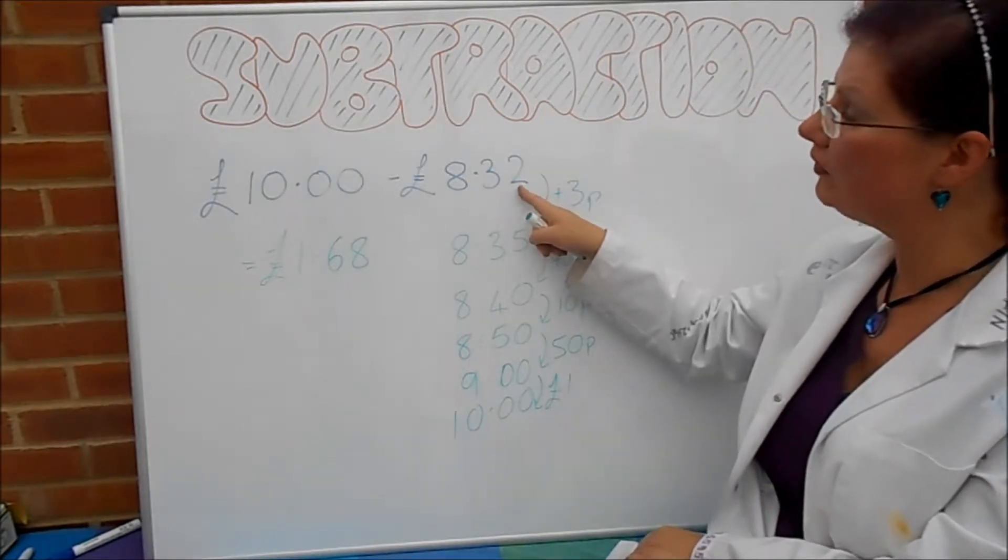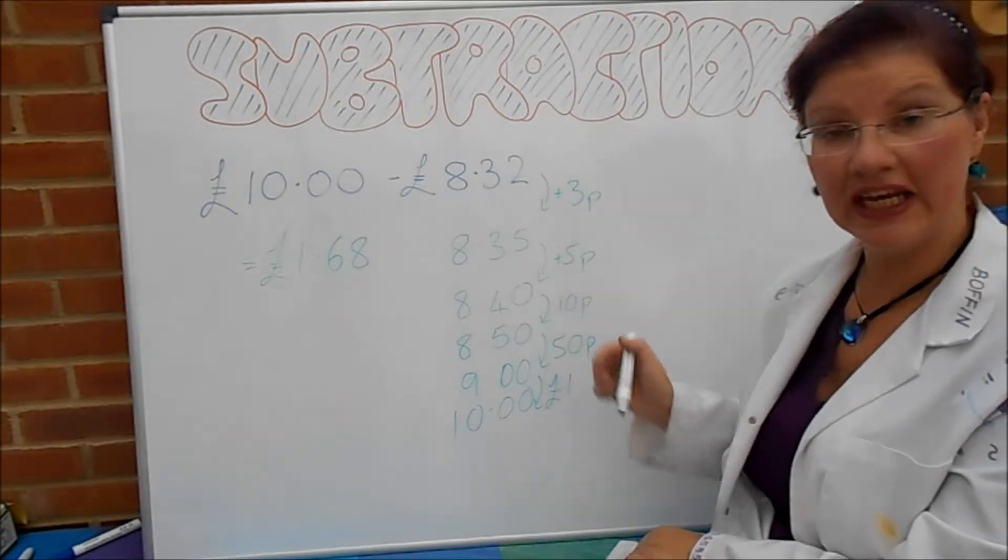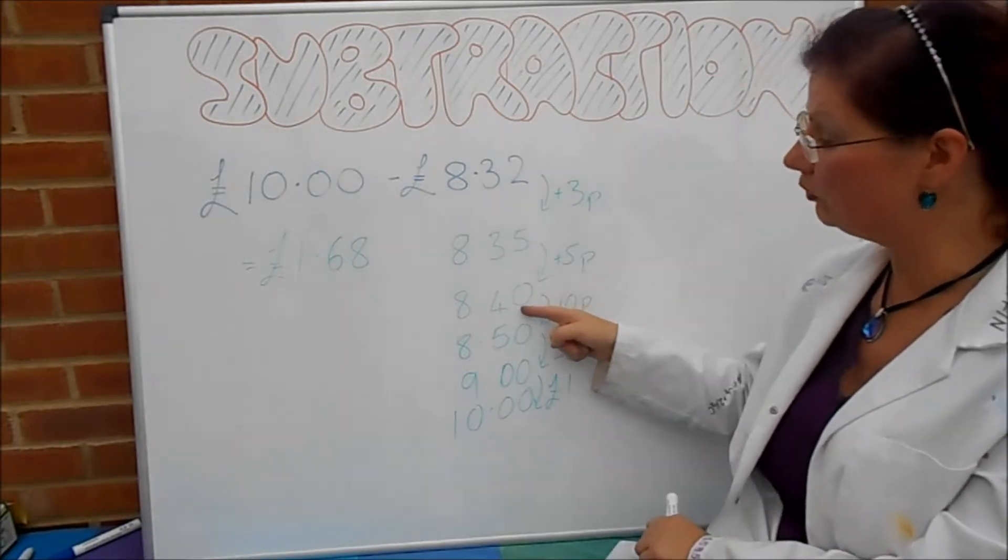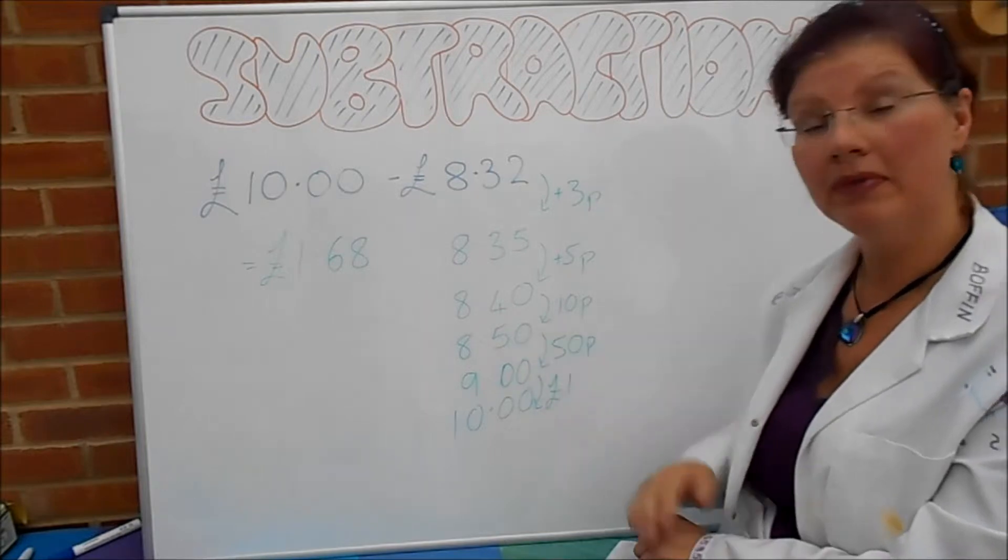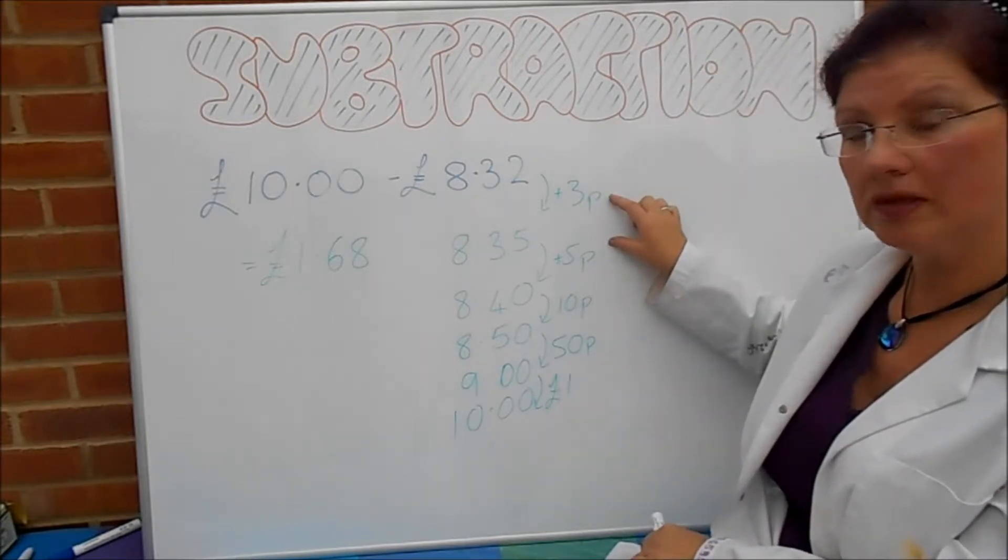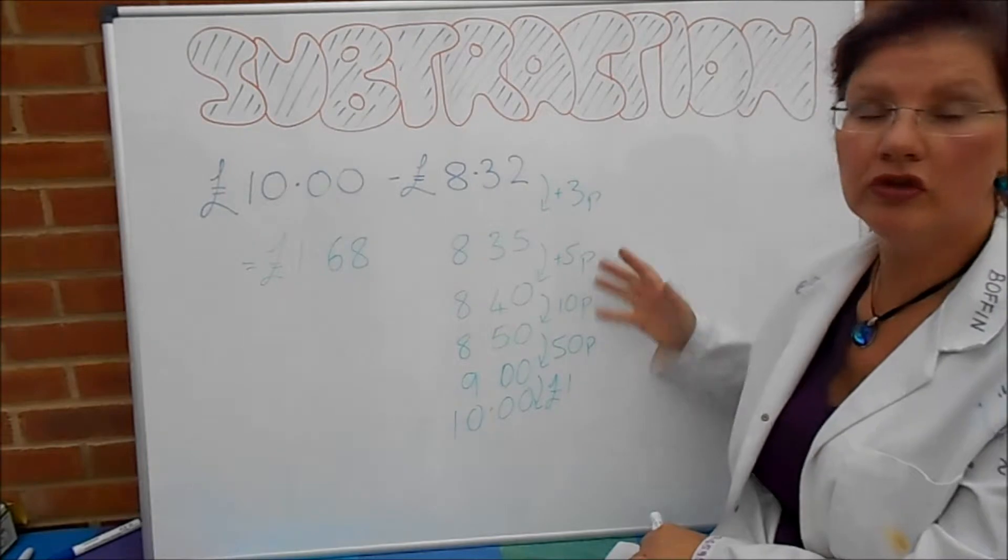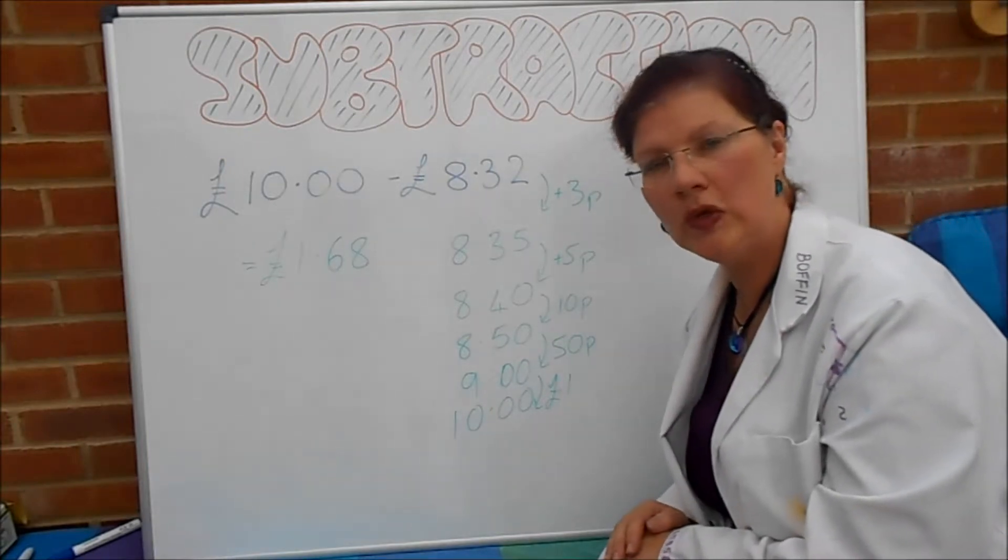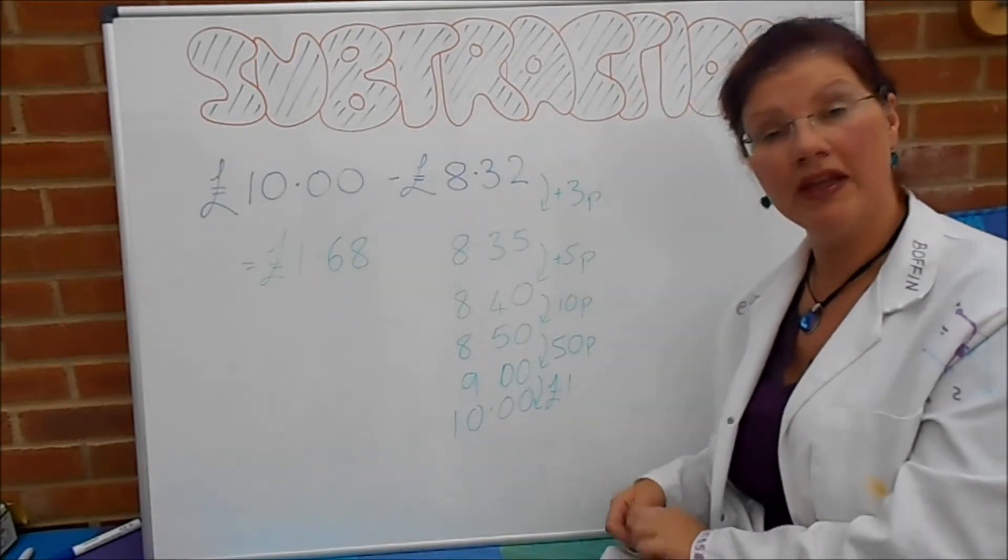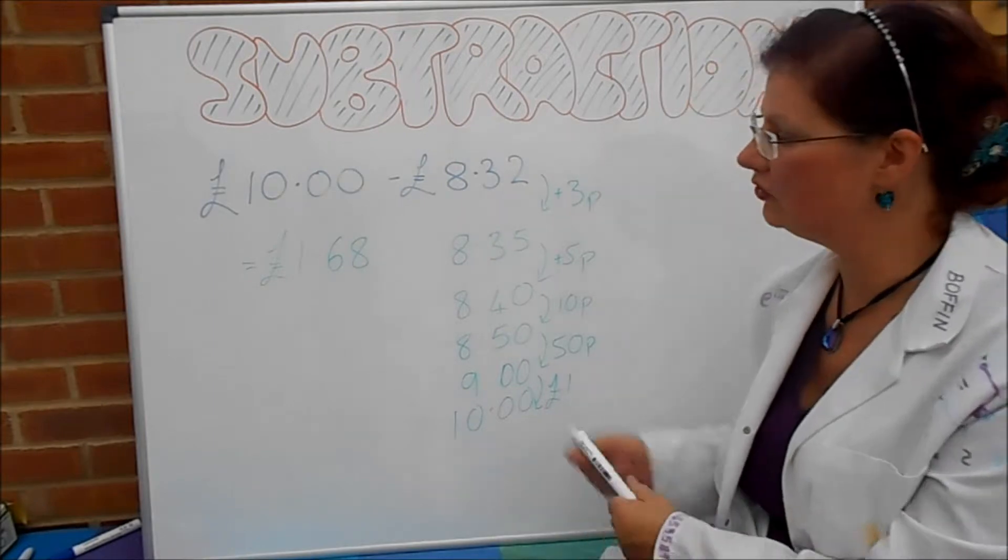Now you could have gone straight from £8.32 up to £8.40 by just adding 8p if you wanted, and you could go straight from £8.40 to £9 by adding 60p if you wanted. You can do them in two little bits and add them together or you can do them in one chunk. It makes absolutely no difference. I'm just going to do that by the column method as well just so you can see that it's true.